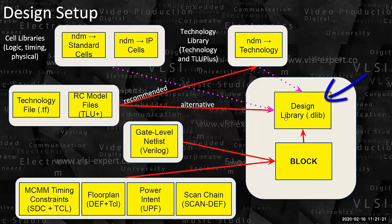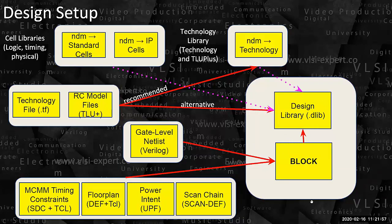The top — all the technology information — goes into the DLib. Now there are hard arrows and dotted arrows. Hard arrows mean that once I have initialized a DLib, a block, or something, the ICC2 tool will have a local copy of this available to it. But dotted arrows mean that every time you call for these things — the technology files, the standard cells, the NDMs — the tool will actually go to the reference path and bring up the information. It does not create a local copy for all this.